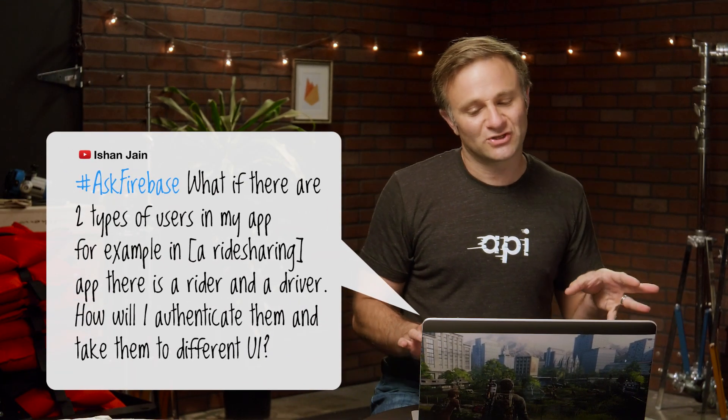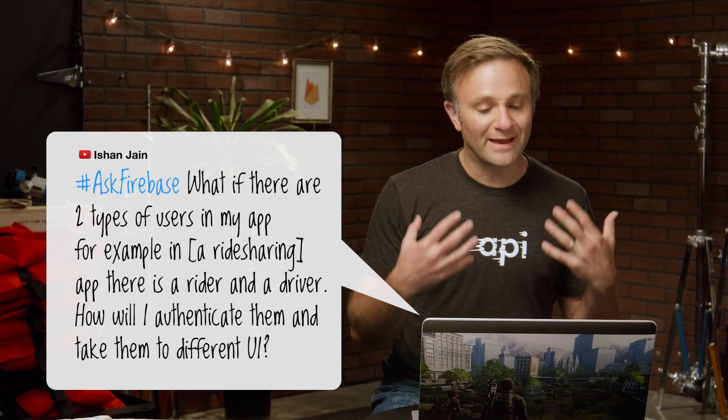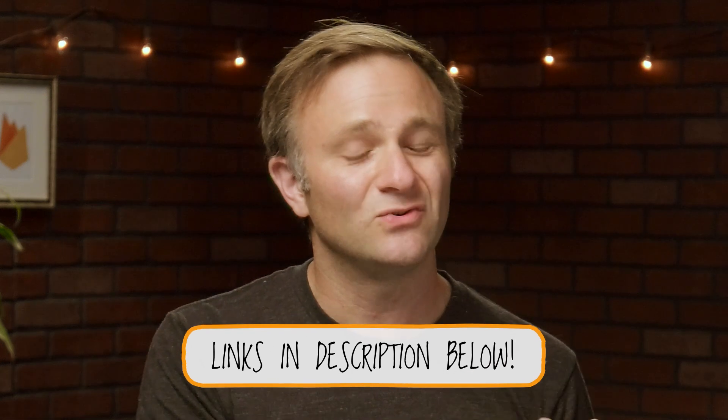This next question comes to us from Ishan on YouTube, who writes: hey Ask Firebase, what if there are two types of users in my app? For example, in a ride sharing app, there's a rider and a driver. How will I authenticate them and take them to different UIs? When you authenticate a user using Firebase Auth, all you really get back is a user ID that you can then use to identify that user in subsequent visits. If you want to distinguish between a rider and a driver, that is work you'll have to do on the server — either within the Firebase database with an admin user putting people in different categories, or on your own server. All you really get back is a unique user ID; it's up to you to determine what UI that user should be seeing. Thank you, Ishan.